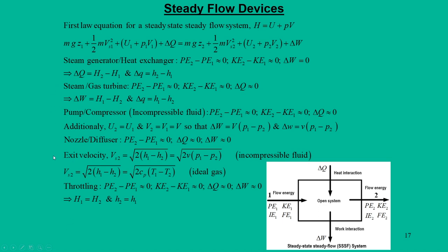All these derivations are available in standard textbooks. We start with the first law equation for a steady flow energy system. Based on the nature of the device, many terms can be neglected, and accordingly we can frame the steady flow energy equations for different components like steam generator, heat exchanger, gas and steam turbines, compressors, nozzles, and diffusers, because these devices each have a specific role to perform.